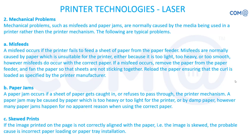Paper jams occur when something gets caught inside the paper pickup area — a damaged part, small pin, or foreign object — or when the paper printing mechanism has a problem. A worn or damaged pickup roller can cause paper to travel diagonally instead of straight, getting stuck inside the printer. Open the printer and slowly remove the paper. If damaged paper remains stuck inside, subsequent sheets will also jam, so remove all paper completely from inside the printer.